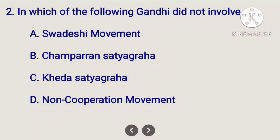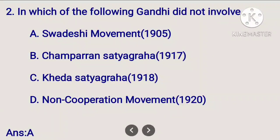In which of the following did Gandhi not get involved? The answer is the Non-Cooperation Movement — wait, Gandhi did not involve. The option is A. This ultimately relates to a movement. The Swadeshi movement was seen in 1905, and Gandhi was still in South Africa at that time, so that is the answer.